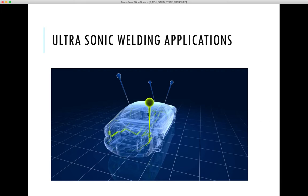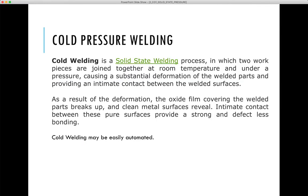There are various applications for ultrasonic welding — for instance, you can create joints for electrical contacts in cars. A separate video has been uploaded for this purpose. Now we are going to move to another topic, which is friction welding. But before moving to friction welding, we are going to first look into cold pressure welding.